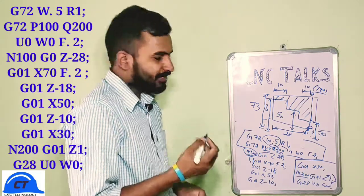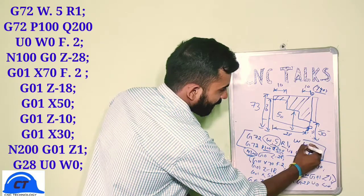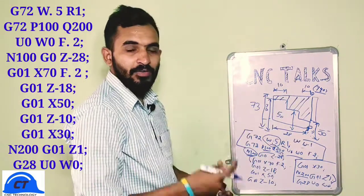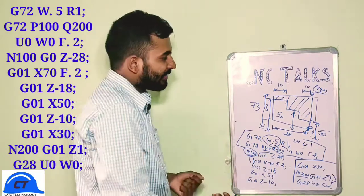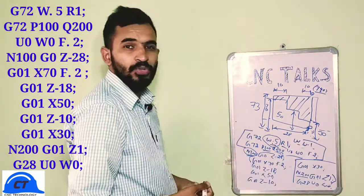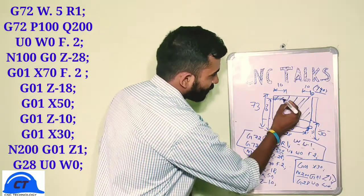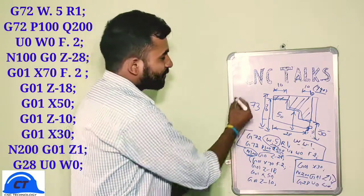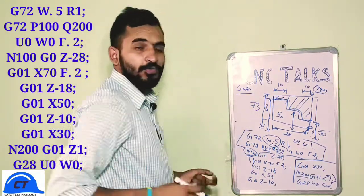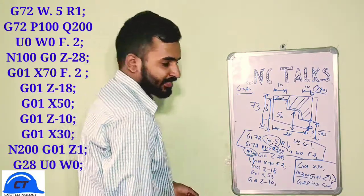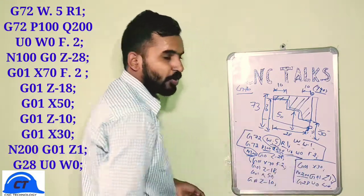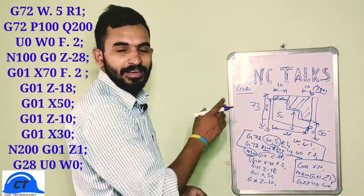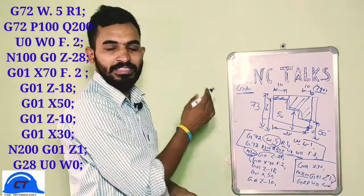The values of U and W define the finishing allowance. For example, if we give U.1 and W.1, after finishing the complete cycle our tool will leave a margin of 0.1mm on both the X and Z axis. To remove that margin at the end, we would need to use G70 for a finishing cut. But in this case, I have given the value of U and W as 0, which means there is no margin left, so there is no need for G70.